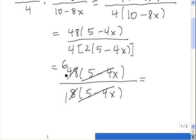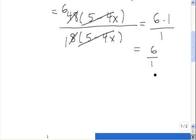So now we rewrite, and we have 6 times 1. On the bottom, we're left with just 1. 6 times 1 is just 6, so we have 6 divided by 1, which is equal to 6.